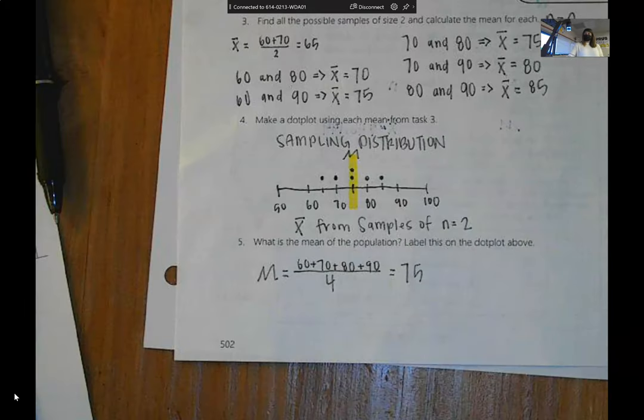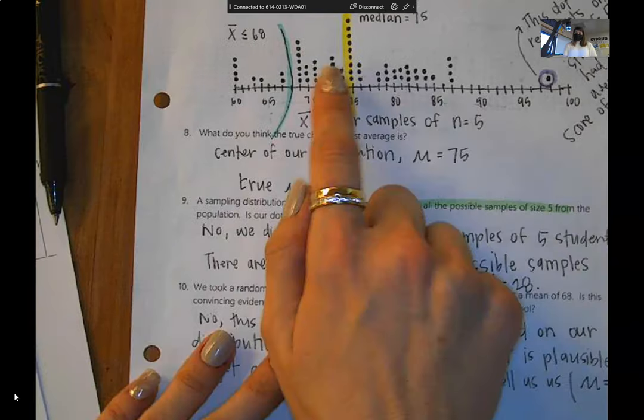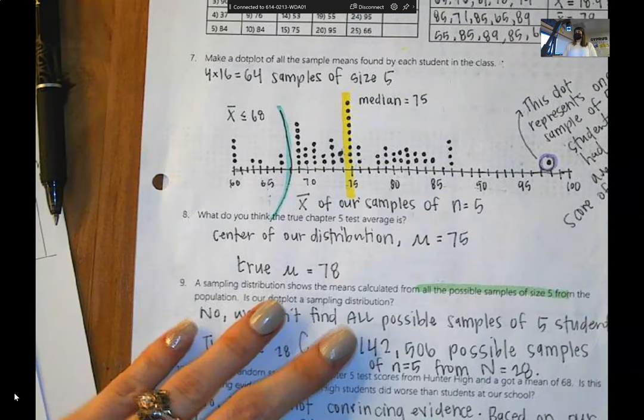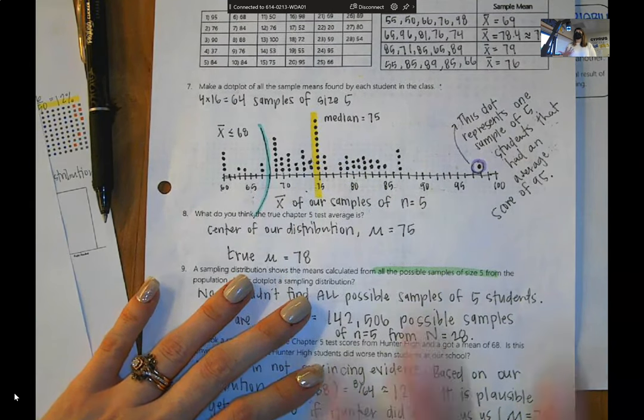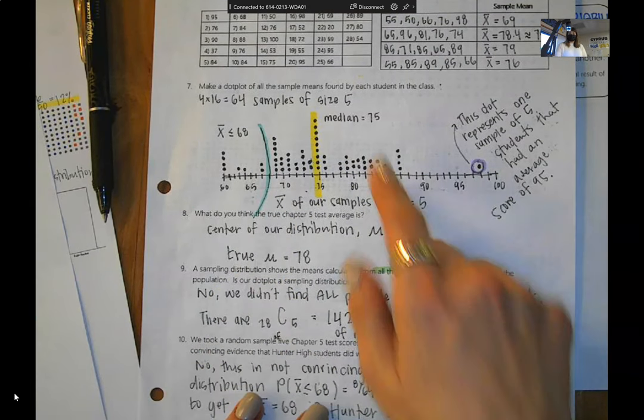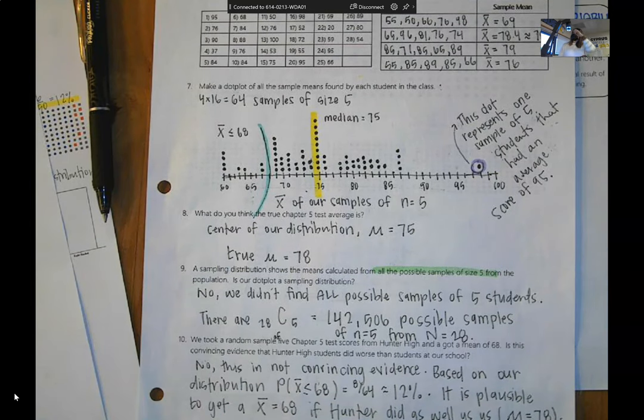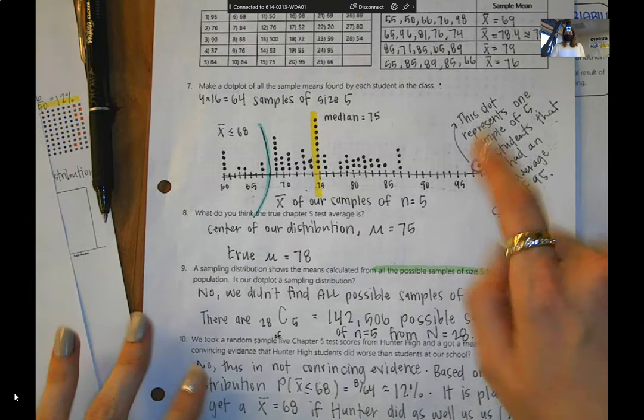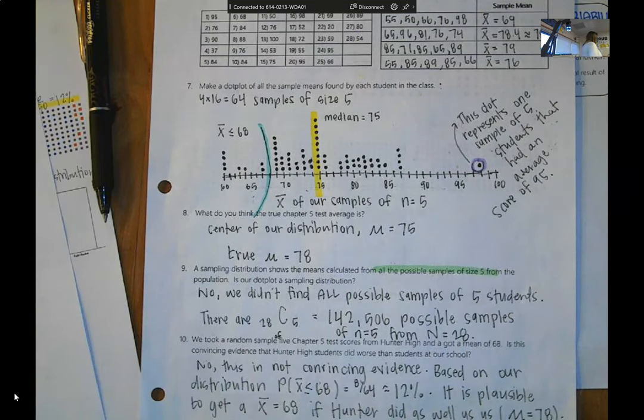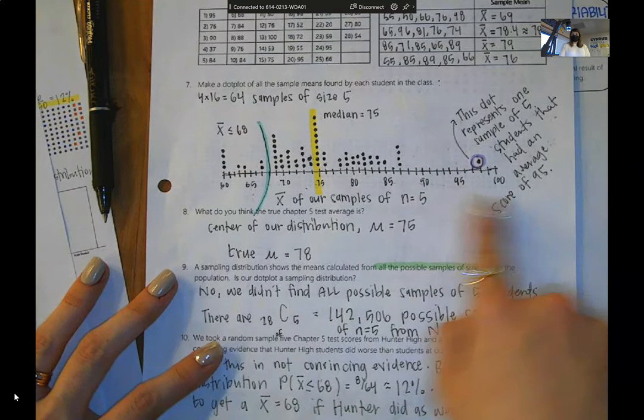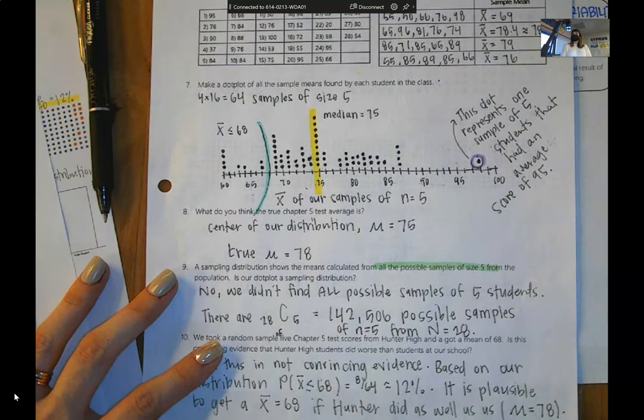We have to keep in mind that our sampling distribution is all possible samples. So this is a true sampling distribution. But technically this isn't a true sampling distribution because this is not all possible samples of size five. So we labeled this point right here.